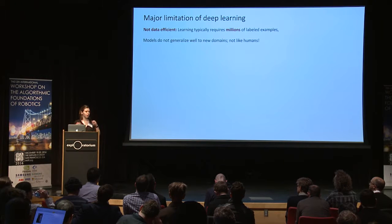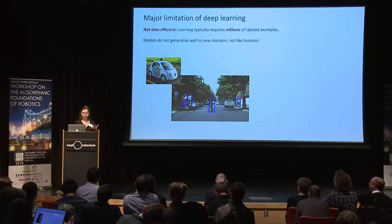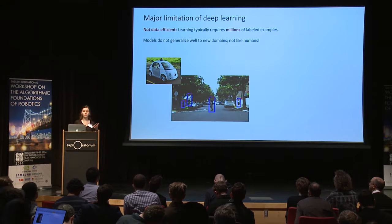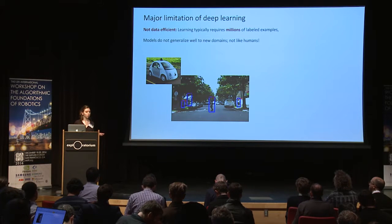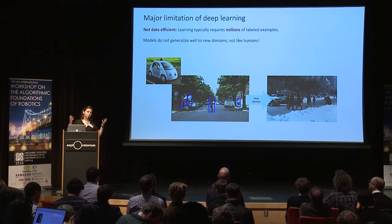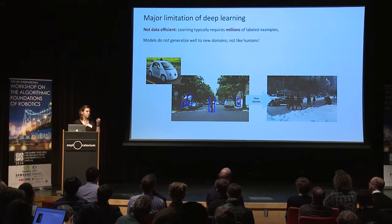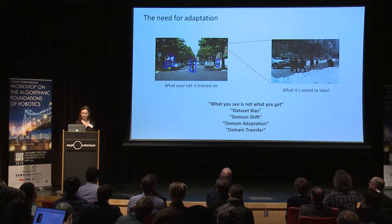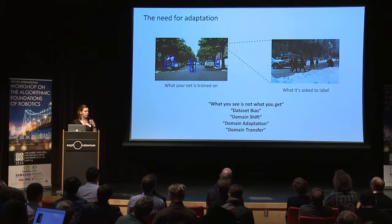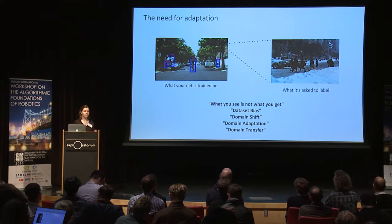Models often have a dataset bias. For example, if you train your model to recognize pedestrians on a lot of sunny streets and then you want it to work well in the winter, your model might not generalize because it might have been specific only to nice weather. This tells us we have a need for adaptation, because a common problem is that what your model is trained on is not what you actually want to use it on.